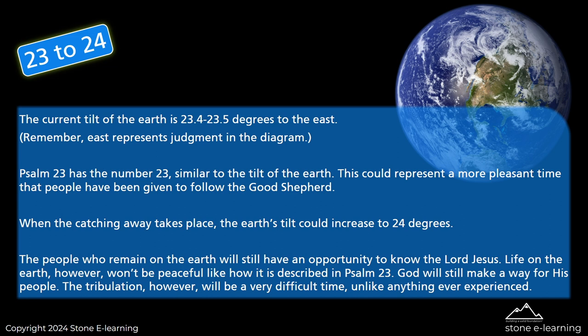The current tilt of the earth is 23.4 to 23.5 degrees to the east — east represents judgment in the diagram. Psalm 23 has the number 23, similar to the tilt of the earth. This could represent a more pleasant time that people have been given to follow the Good Shepherd. When the catching away takes place, the earth's tilt could increase to 24 degrees. The people who remain on the earth will still have an opportunity to know the Lord Jesus, but life on earth won't be peaceful like it is described in Psalm 23. God will still make a way for his people.